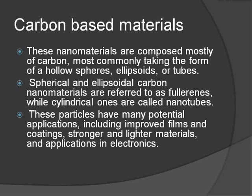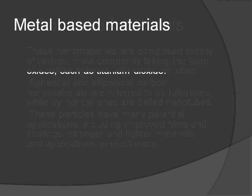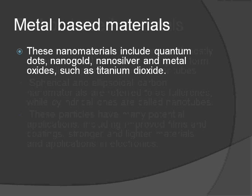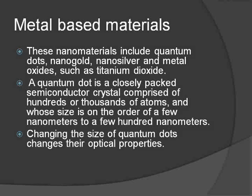Carbon-based nanomaterials have many potential applications including improved films and coatings, stronger and lighter materials, and applications in electronics. Metal-based nanomaterials include quantum dots, nanogold, nanosilver, and metal oxides such as titanium oxide. A quantum dot is a closely packed semiconductor crystal comprised of hundreds or thousands of atoms whose size is on the order of a few nanometers. Changing the size of quantum dots changes their optical properties.